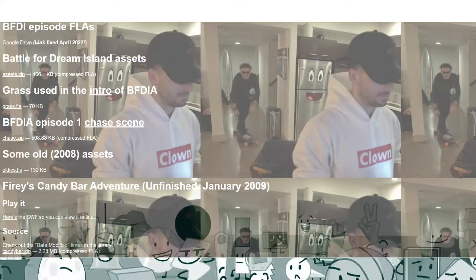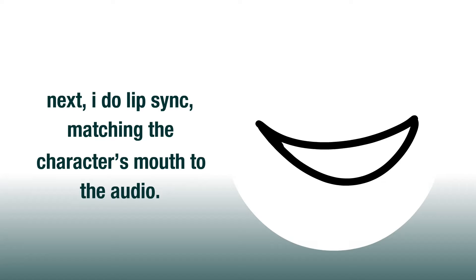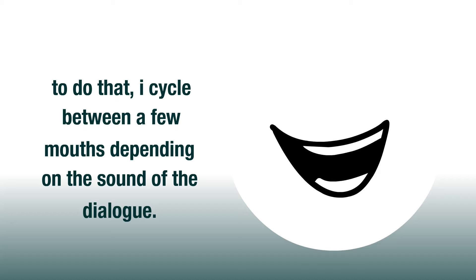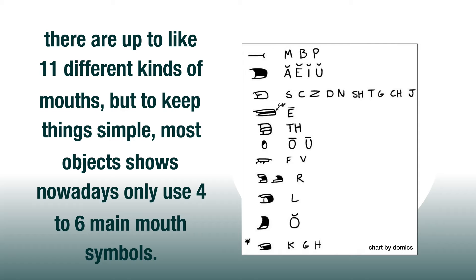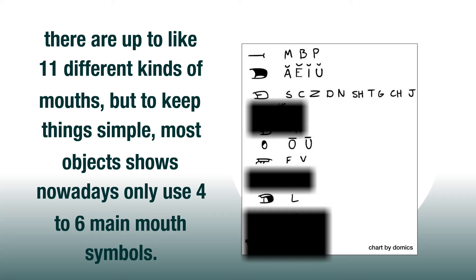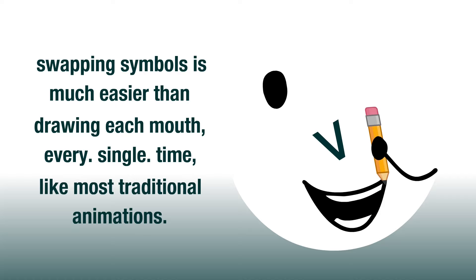Next, I do lip sync — matching the character's mouth to the audio. To do that, I cycle between a few mouths depending on the sound of the dialogue. There are up to about 11 different kinds of mouths, but to keep things simple, most object shows nowadays only use four to six main mouth symbols. Swapping symbols is much easier than drawing each mouth every single time like most traditional animations.